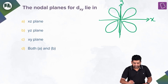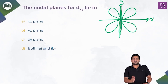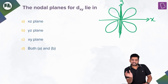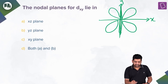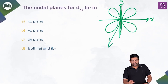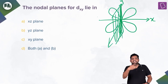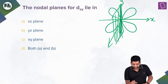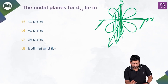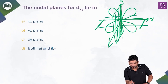One nodal plane goes along the YZ plane. If x is horizontal, y is vertical, then z is out of the board. So one plane is the ZY plane. The other nodal plane lies along the XZ plane.